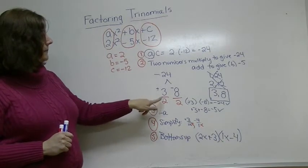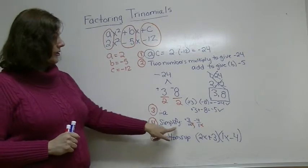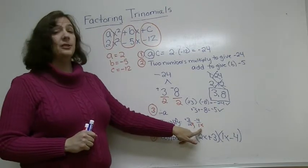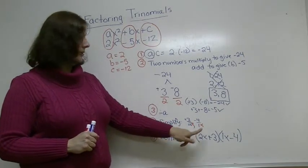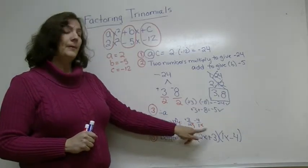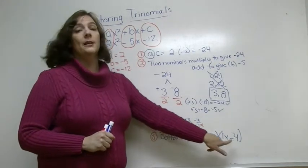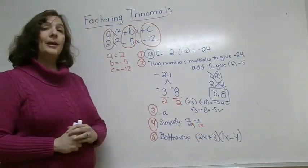Step 3, divide both those numbers by your A. Step 4, reduce those fractions to simplest form but keeping them as fractions. Step 5, stick an x on the denominator, bottoms up, put the denominator first, plus or minus the numerator, and you're all done.